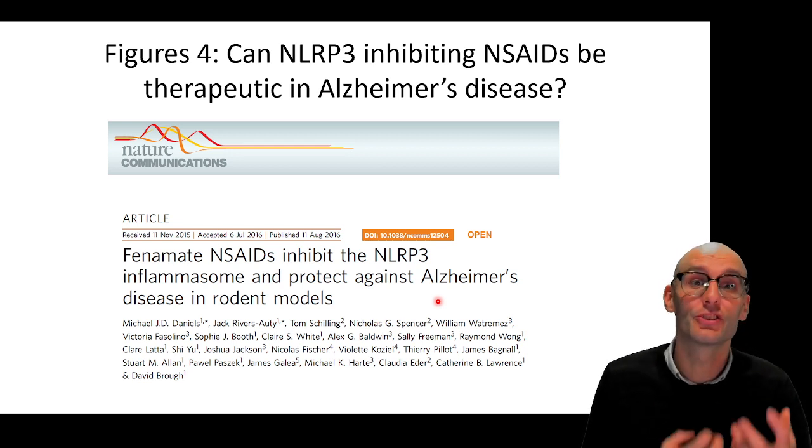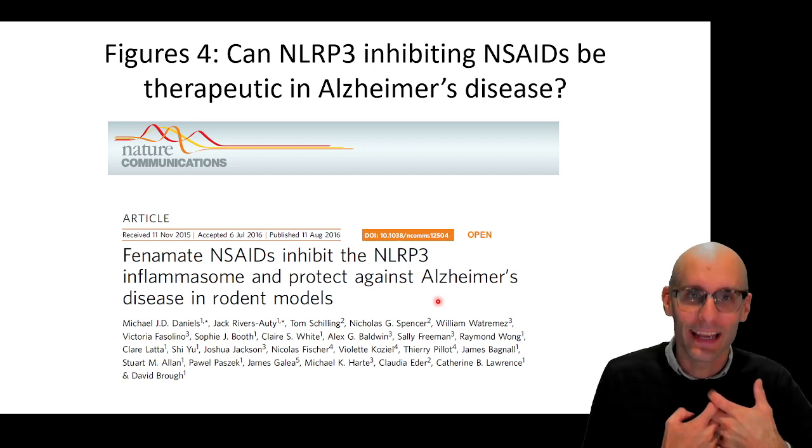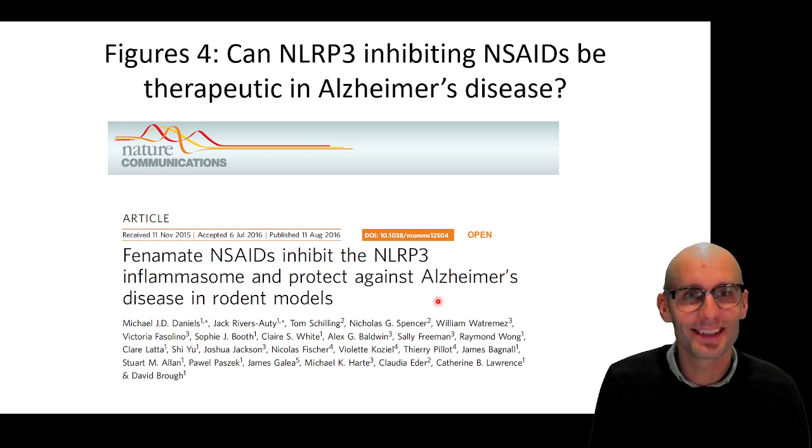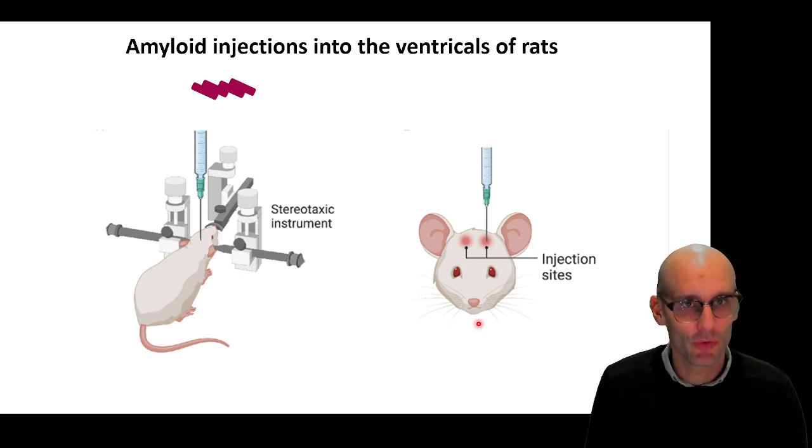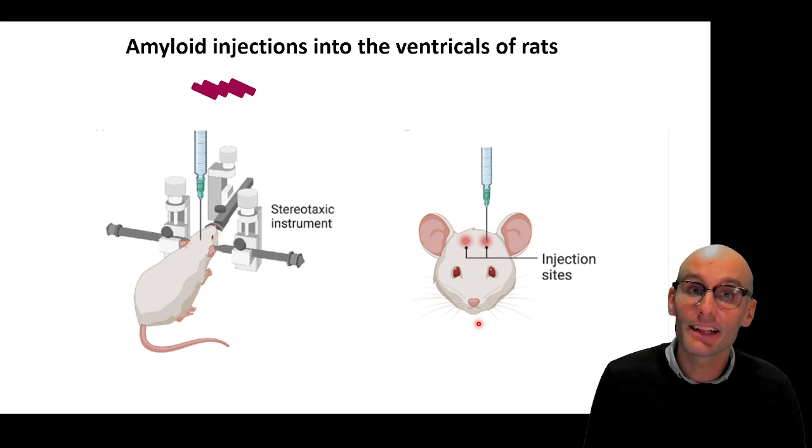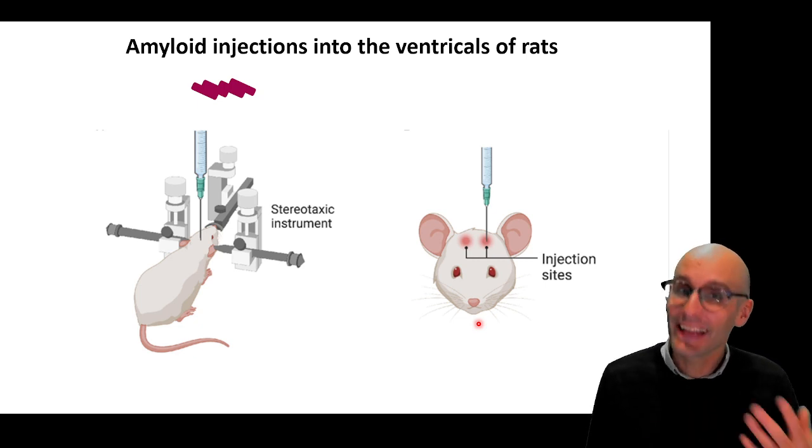We wanted to test, do these drugs work in an animal model of Alzheimer's disease that we know NLRP3 might be involved in. So let's jump into it. First up, now Alzheimer's genetic models, which I've covered, which is when you genetically engineer a mouse to have familial Alzheimer's disease genes, they take time. They take a year until you get cognitive deficits.